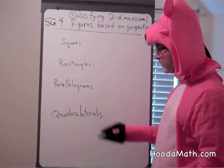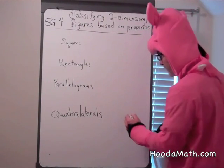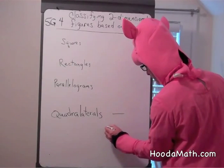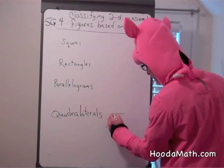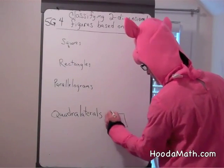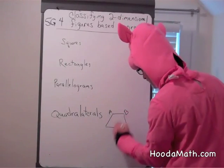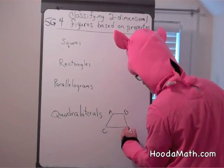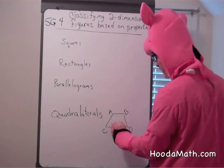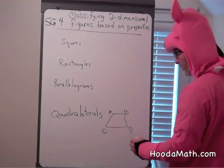Quadrilaterals include shapes like trapezoids where two of the sides, AB, CD, two of the sides are parallel.